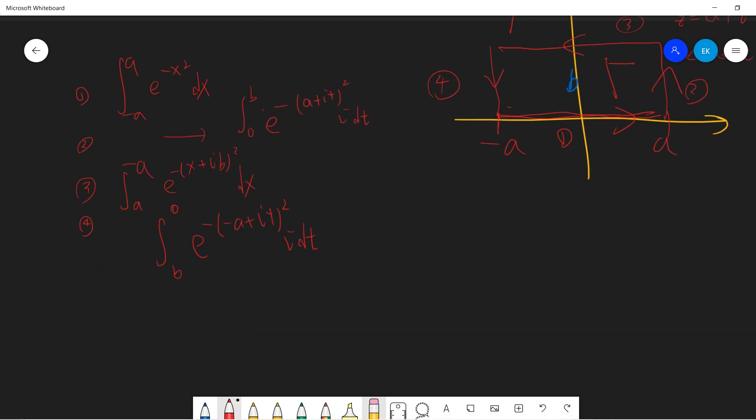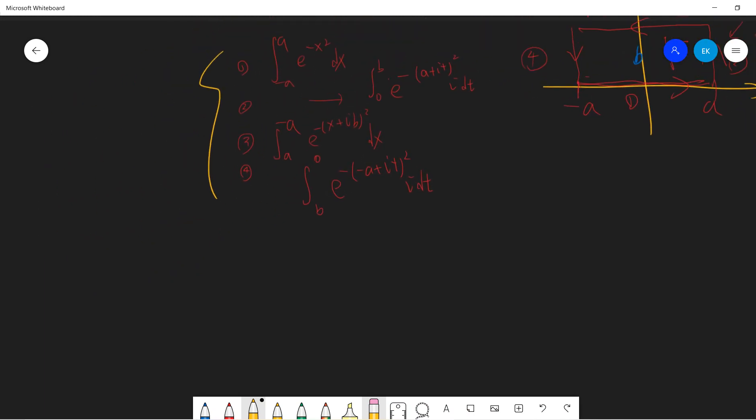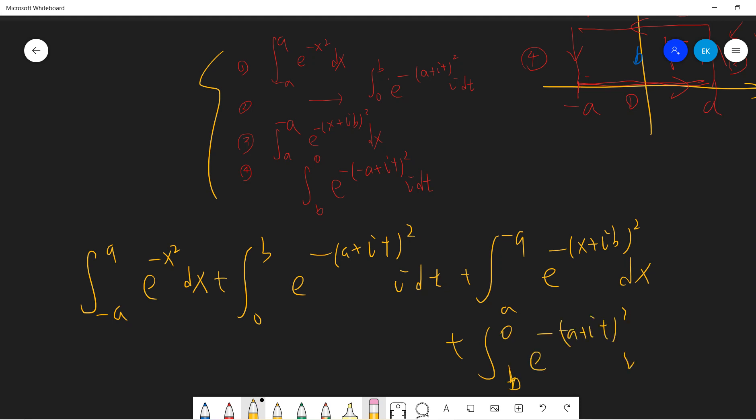Now we don't need this picture since we already have everything. Let me spend a little bit of time to write everything down. [The sum equals] zero, if a greater than zero, b greater than zero. This is from our contour integration.